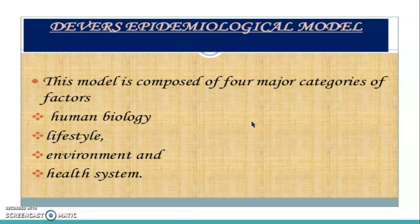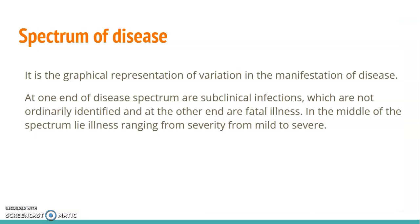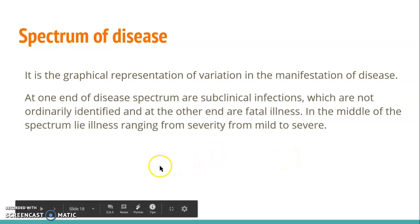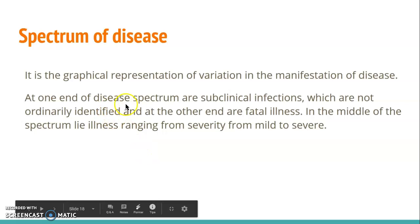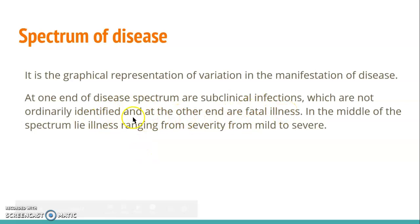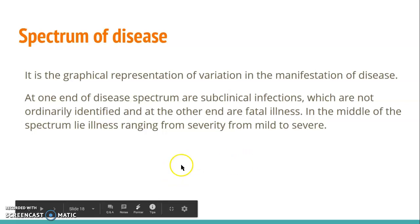When we talk about disease causation, we also want to discuss the spectrum of disease — the graphical representation of variation in the manifestation of disease. At one end of the spectrum there is illness, and at the other end there is health, with people living in the middle. Moving toward health means a healthy lifestyle; moving toward illness means a risk of getting sick. At one end are subclinical infections not ordinarily identified, at the other end are fatal illnesses, and in the middle lie illnesses ranging in severity from mild to severe. The human moves within this spectrum throughout their life.